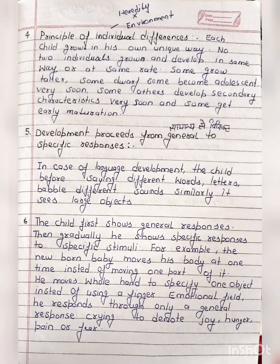The fourth principle is the principle of individual differences. We all know that everyone is different — each child grows in his own unique way. No two individuals grow and develop in the same way or at the same rate. Some grow taller, some dwarf; some become adolescent very soon, some develop secondary characteristics or early maturation sooner. Some people grow quickly, some become mature or socially developed later. This is the principle of individual differences.